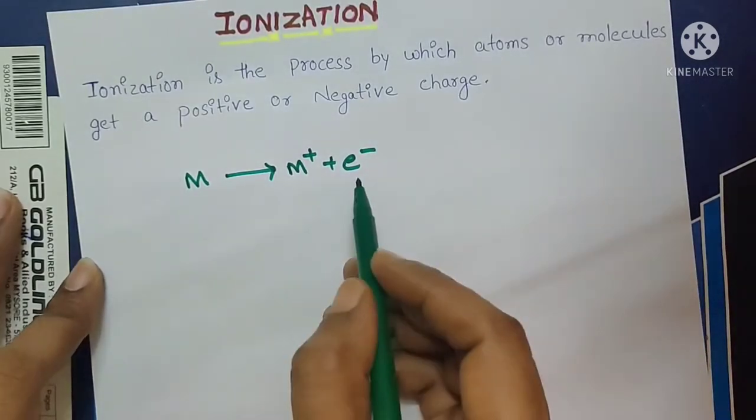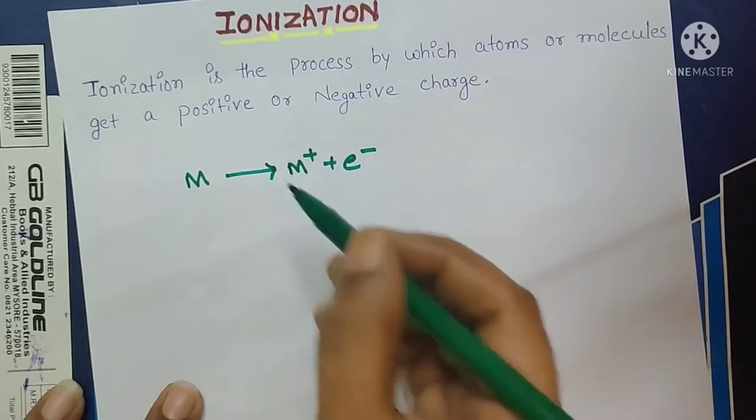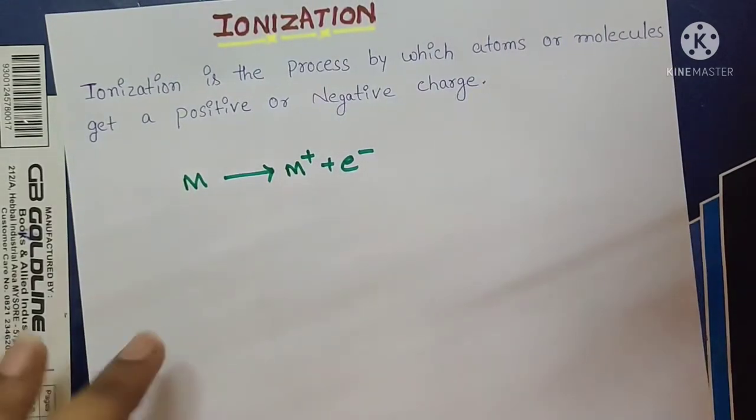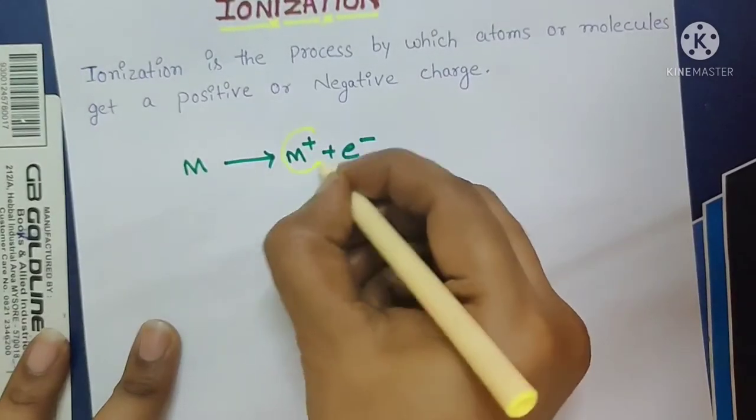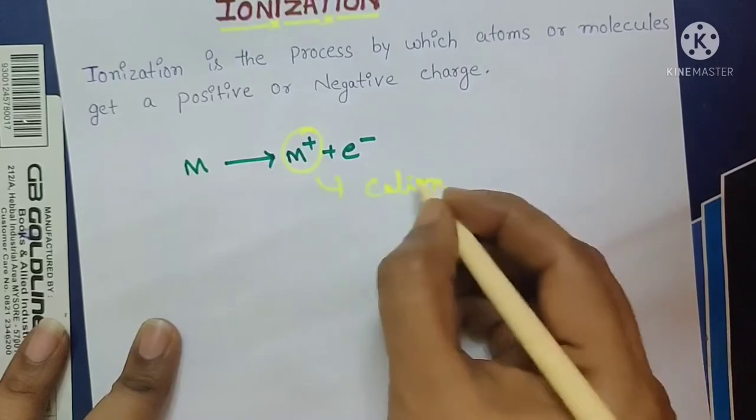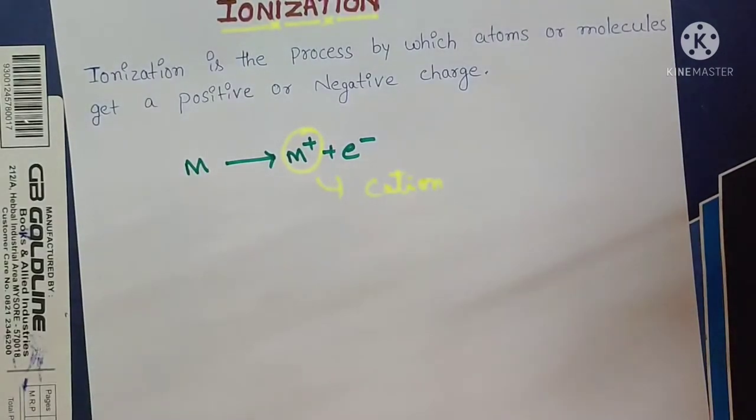Here, one electron is removing. So, what is the ion formed here? Positive ion. Positive ion is known as cation. Cation is formed here. We will see another example.